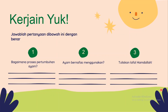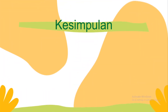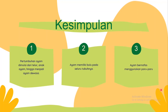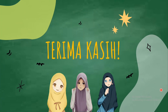Yang terakhir, kakak akan menunjukkan lafal hamdalah yang benar. Ayo kita baca bersama-sama: Alhamdulillahirrabbil'alamin. Dari materi yang disampaikan, kita dapat menarik kesimpulan bahwa pertumbuhan ayam dimulai dari telur, anak ayam, hingga menjadi ayam dewasa. Ayam memiliki bulu pada seluruh tubuhnya dan bernafas menggunakan paru-paru. Terima kasih adik-adik yang telah mendengarkan dan mempelajari materi ini. Semoga video ini bermanfaat. Assalamualaikum warahmatullahi wabarakatuh.